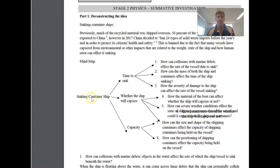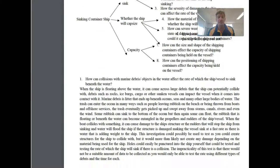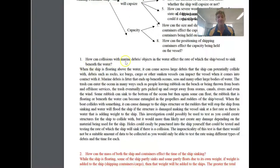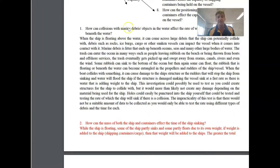Similarly here. So here's one big idea, the overall topic, time to sink, whether the ship will capsize, and its capacity. So here's three sub ideas and then it's broken into these eight. So here's their critical deconstruction. What they've actually got is how can collisions with marine debris affect the rate of the vessel/ship to sink. And what they've actually got is this. How can collisions, blah blah blah. So what they've got is their brief brainstorm up here. Now they've actually critiqued it. So this is why this is an A. They've actually gone into some level of detail about what they could possibly do and why it might be useful or effective.